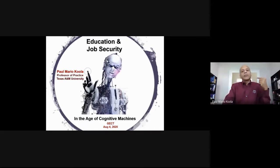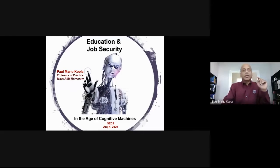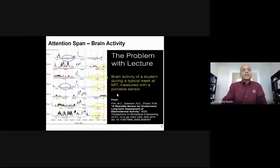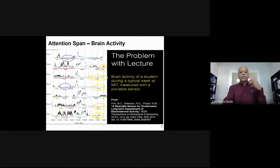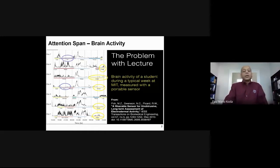I'll first define education, then go through each different term. We'll take two breaks in between so I don't lecture continuously. My first slide shows the attention span, or brain activity, of a student. This is the brain activity of an MIT student for a whole week — time on the x-axis, days on the y-axis. The yellow blocks show class time, and brain activity is pretty much dead during class — just like watching TV.